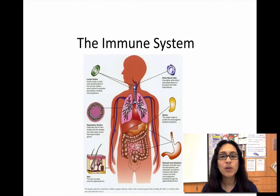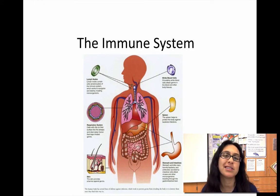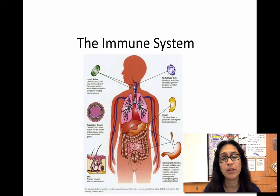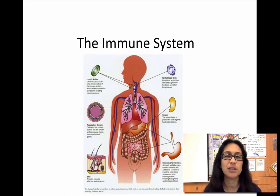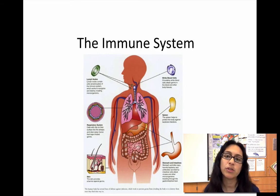Hey Mustangs, in this video we're going to be taking a look at the three lines of defense that are part of your immune system. Your immune system is your body's system that is there to protect you and keep you healthy and safe against outside invaders such as bacteria, viruses, fungus, parasites — anything that could hurt or damage your cells and your body.